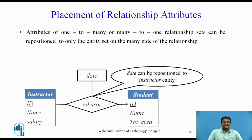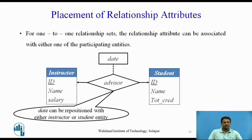Here, we can see the attribute date of the relationship set is repositioned to the instructor entity. For one-to-one relationship sets, on the other hand, the relationship attribute can be associated with either one of the participating entities. Hence, in this figure, date is repositioned with either the instructor or the student entity.